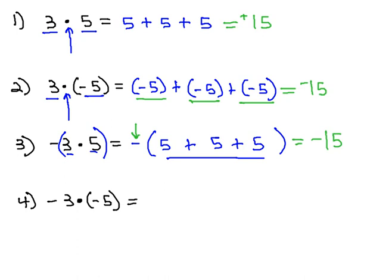This last example kind of combines both those together. Again, we're going to think about that front negative as being in front of a set of parentheses, and then we've got 3 sets of negative 5 that need to be added together. So negative in front of parentheses, and then 3 negative fives added together, negative 5 plus negative 5 plus negative 5.